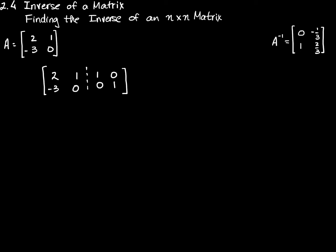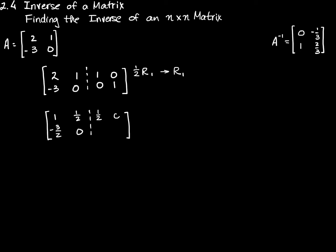To start with, I'll multiply row 1 by 1 half and put that into row 1, because I want a 1 in this position. So 1 half times 2 is 1, 1 half times 1 is 1 half, 1 half times negative 3 is negative 3 halves, and 1 half times 0 is 0. I get 1 here, 1 half here, negative 3 halves here, and 0 here. But I need to do the same thing on the right side: multiply 1 half by 1, 0, 0, and 1 half.